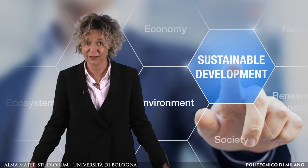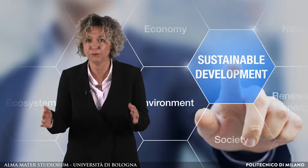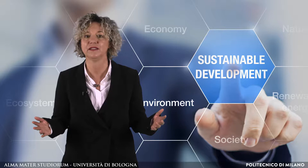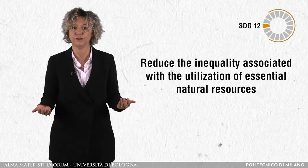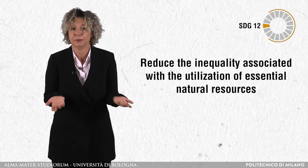Hence, SDG 12 can only be achieved when every country assures that their production and consumption patterns are not undermining the environmental boundaries of the planet. A key proposal in this SDG is to reduce the inequality associated with the utilization of essential natural resources. In effect, it will be possible to enhance the livelihoods of underdeveloped countries. A major requirement for successful adoption and implementation of this SDG is education.